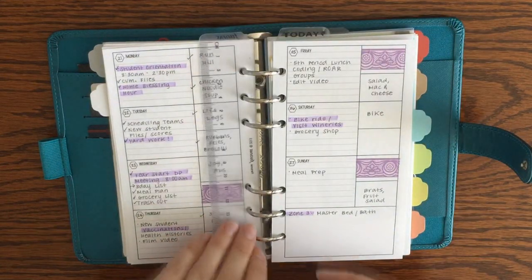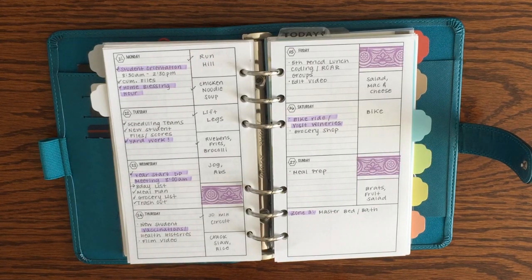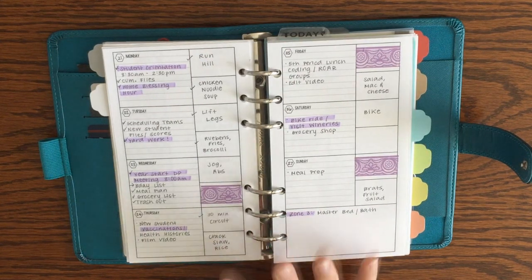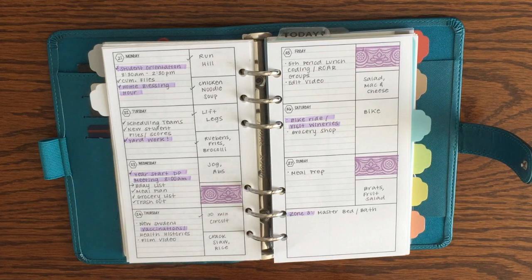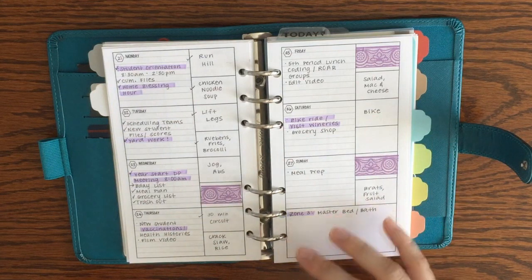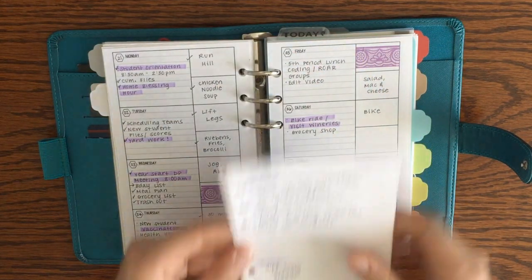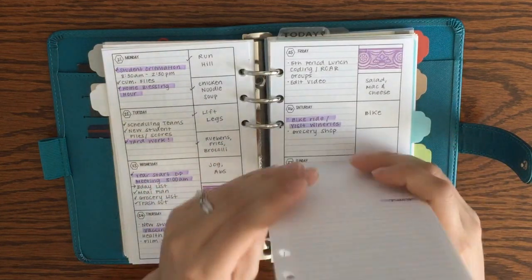I did film a plan with me on this week so check out my previous video if you'd like to see that. In addition to my horizontal week on two pages with the tracking boxes there on the side, I also have daily pages that I stick right in the middle.